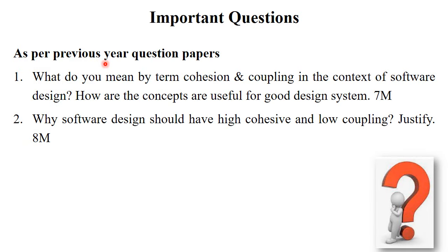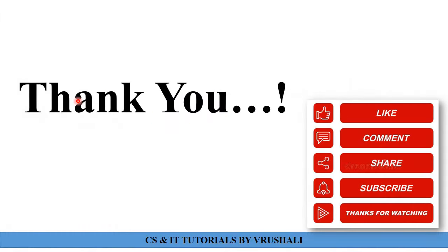From previous year question papers, there are two most important questions. First: what do you mean by the terms cohesion and coupling in the context of software design, and how are these concepts useful for a good design system? Here you explain their definitions and types with examples for 7 marks. Second: why should software design have high cohesion and low coupling — justify. Here you explain the advantages covered in the previous slides for 8 marks. This is all about coupling and cohesion. Thank you. Keep learning.